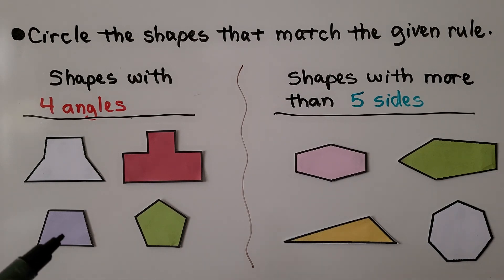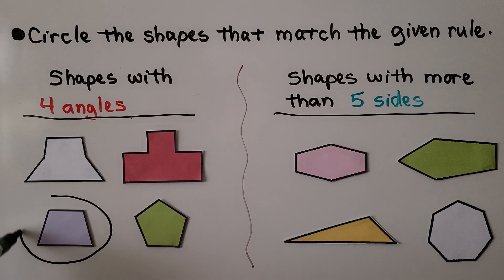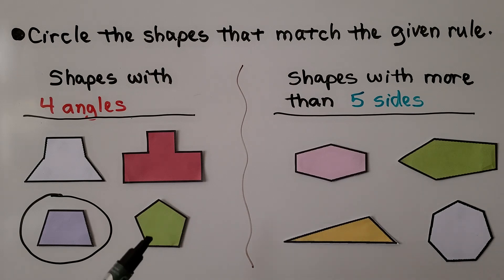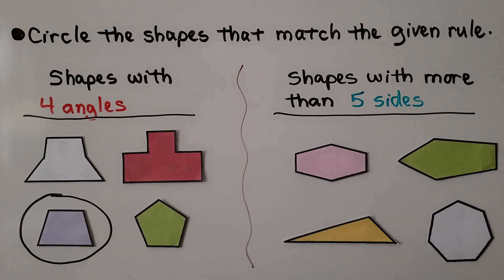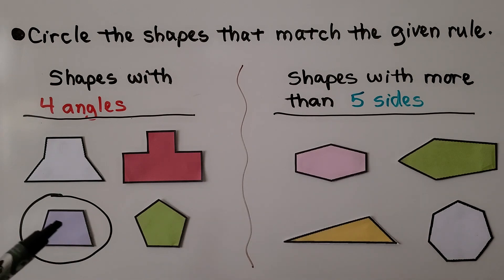How about this? One, two, three, four — yes, that has four angles. That's a trapezoid — it's a quadrilateral with four angles. What about this pentagon? It has one, two, three, four, five sides, but that means it's going to have five angles. So it's not a shape with four angles. So this trapezoid is the only one that fits the rule.